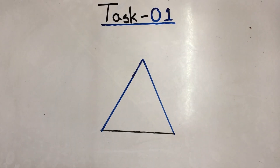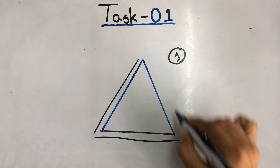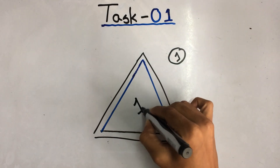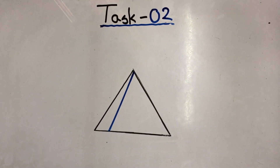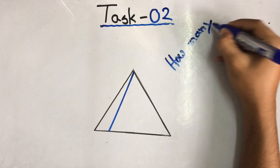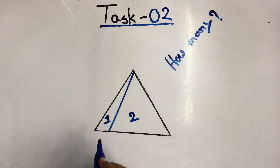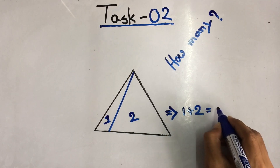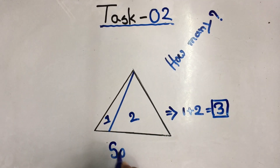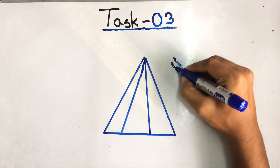Let's get started with task one. I'm asking you how many triangles exist on the whiteboard. Anyone can easily say only one, because three lines make a triangle. So can you tell me right now how many triangles exist on the board? First of all, just mark how many segments are in the triangle, then sum the numbers one and two, and the answer is three.